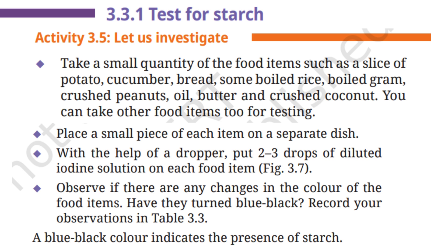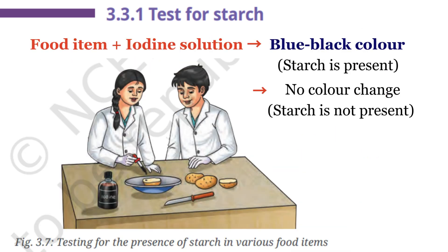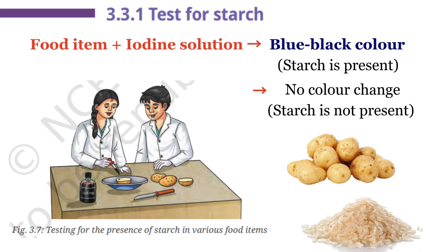Place a small piece of each item on a separate dish. With the help of a dropper, put 2–3 drops of diluted iodine solution on each food item. Observe if there are any changes in the color of the food items. Have they turned blue-black? Record your observations in Table 3.3. A blue-black color indicates the presence of starch. So to check if a food item contains starch, put 2–3 drops of iodine solution on it. If the food turns blue-black, it means starch is present.